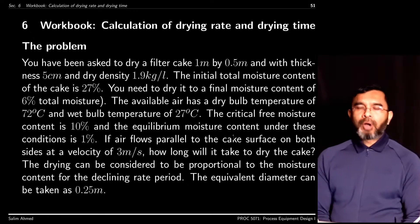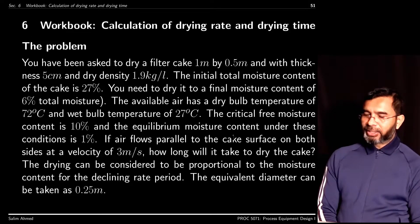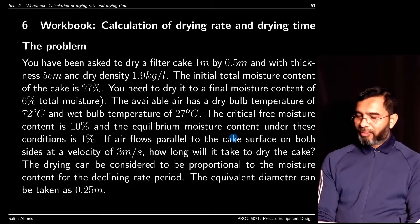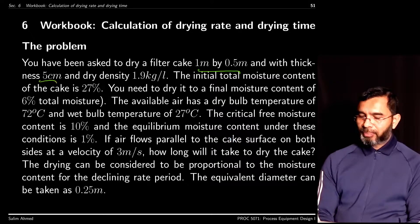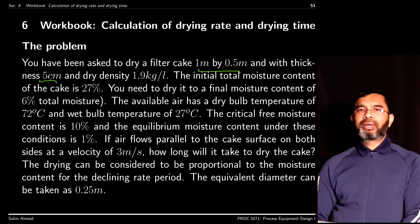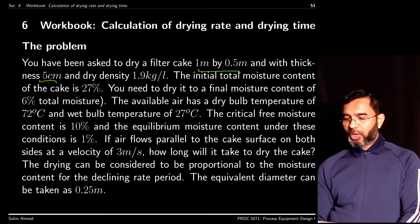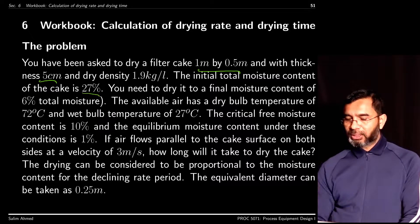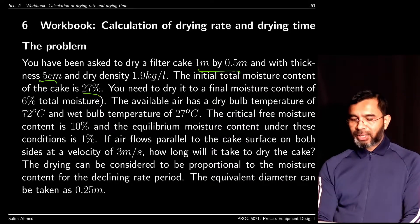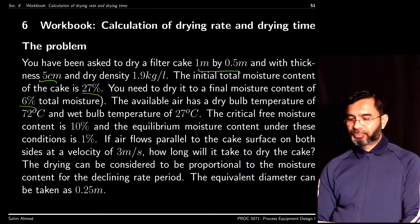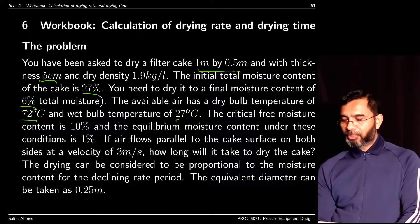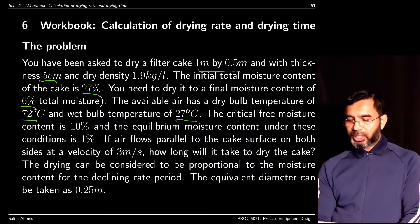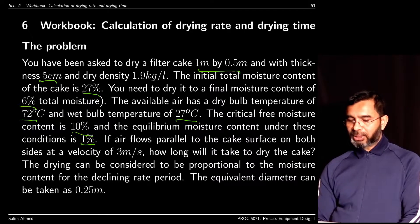Here is another workbook problem on calculation of drying rate and drying time. We are asked to dry a filter cake 1 meter by 0.5 meter with thickness 5 cm and dry density of 1.9 kg/liter. The initial moisture content is 27% and the final moisture content is 6% total moisture. The available air has a dry bulb temperature of 72°C and a wet bulb temperature of 27°C. The critical moisture content is 10% and the equilibrium moisture content under these conditions is 1%.